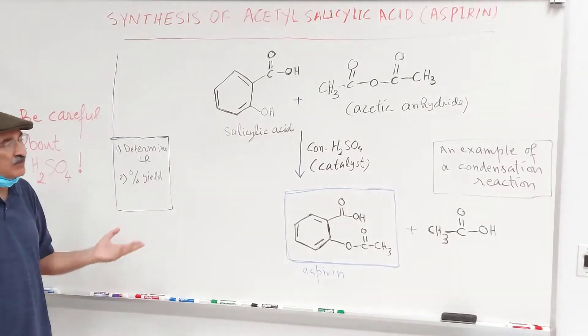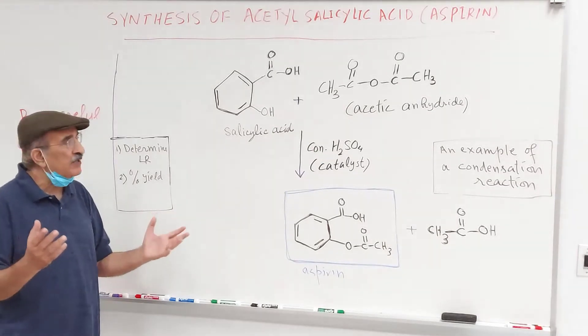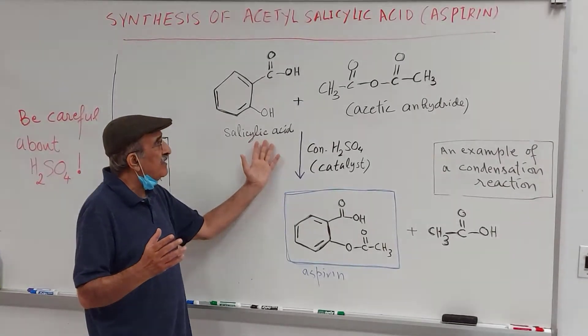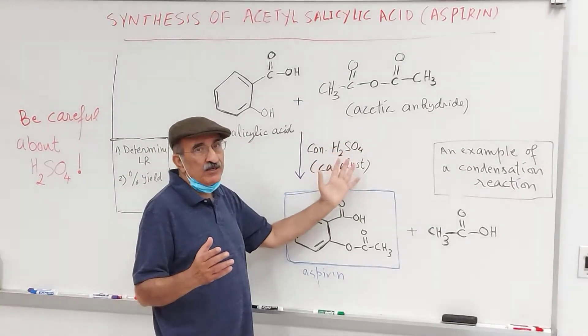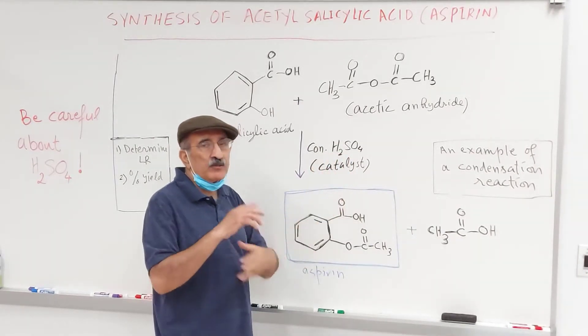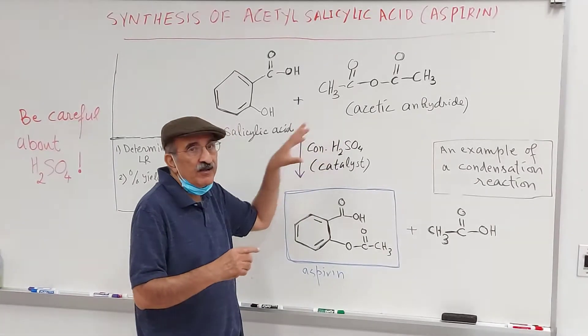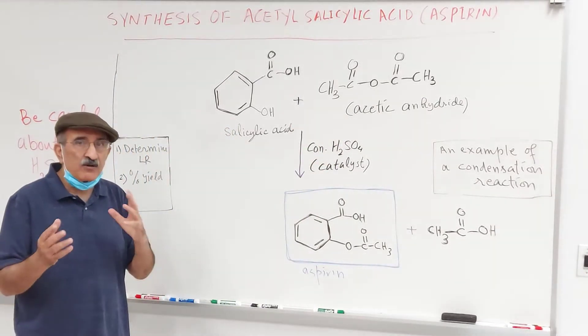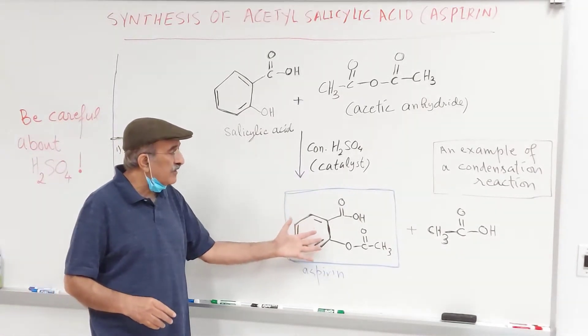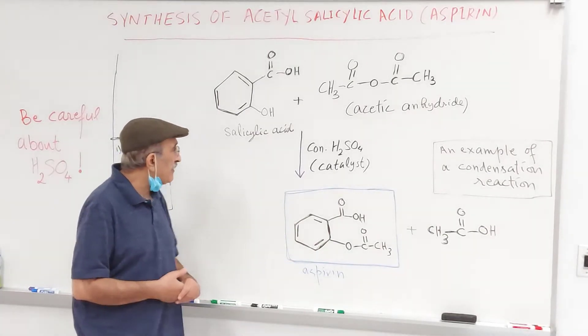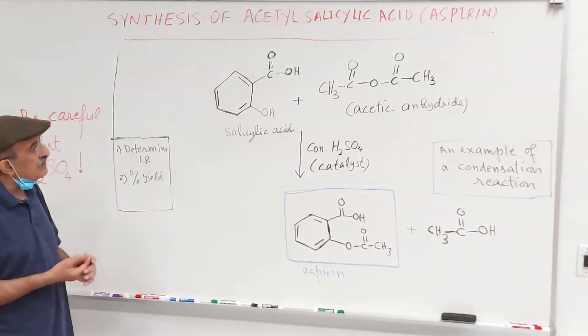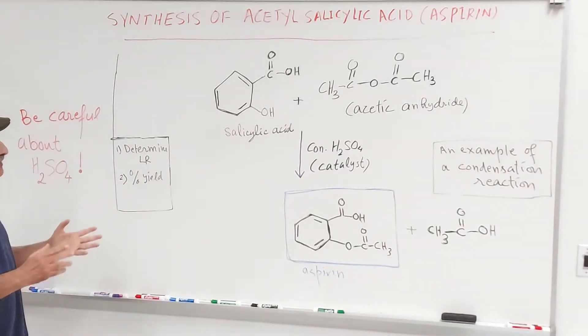You will be synthesizing aspirin today by a very simple reaction, by reacting salicylic acid with acetic anhydride in the presence of a strong acid, sulfuric acid. We will be stirring it together for a certain amount of time and after that you will be isolating the aspirin product and finding out the percentage yield after determining the limiting reagent.